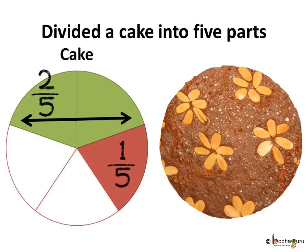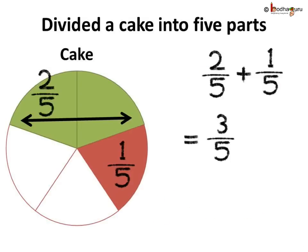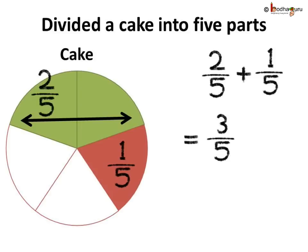For example, Anand divides a cake into 5 parts. First he takes 2 parts, i.e., 2 by 5 parts. Then another piece, which is 1 by 5 part. So he takes 2 by 5 plus 1 by 5. Here the two fractions are like fractions — the denominators are the same, which is 5. So we can add the numerators: 2 plus 1 is 3, so we get 3 by 5. Aman took 3 by 5 parts of the cake.